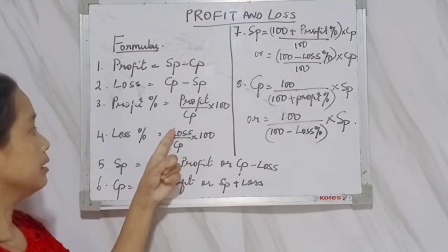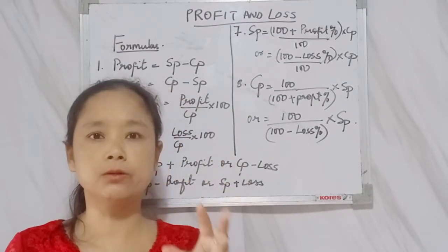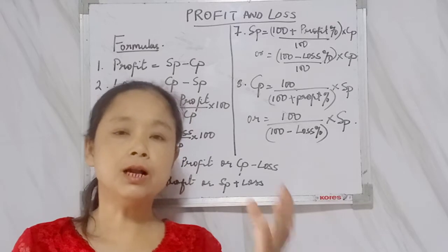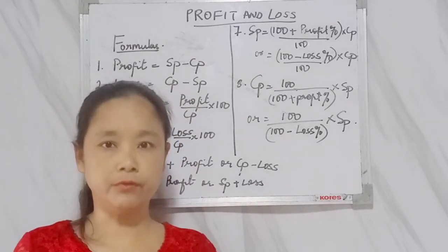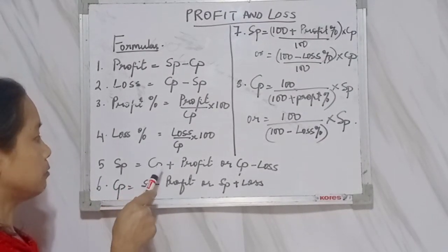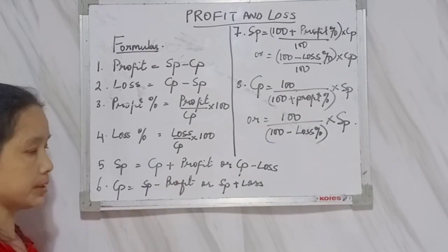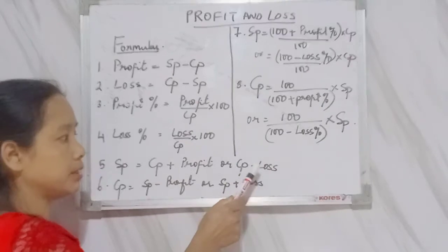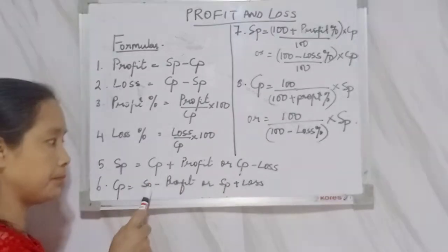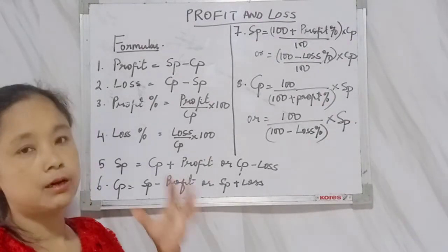Loss percent is loss divided by CP, multiplied by 100. In order to find out the loss percent or profit percent, you must always know the cost price — even if the cost price is not given in the question, you will have to find it out first. Selling price equals cost price plus profit. When there is loss, selling price equals cost price minus loss. To find cost price, subtract profit from selling price, or add loss to selling price.